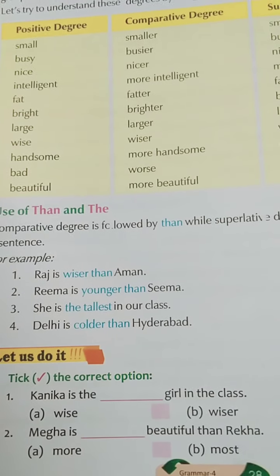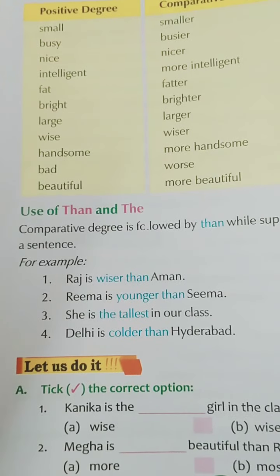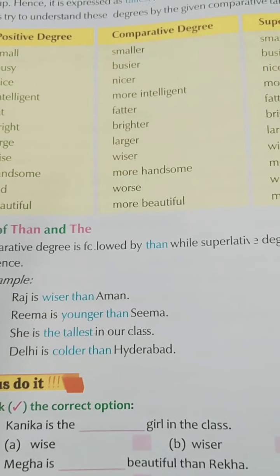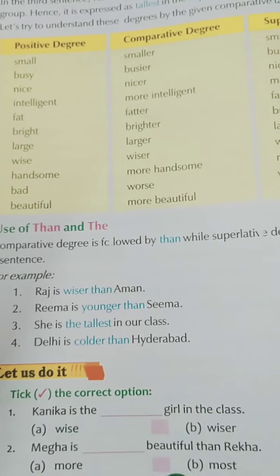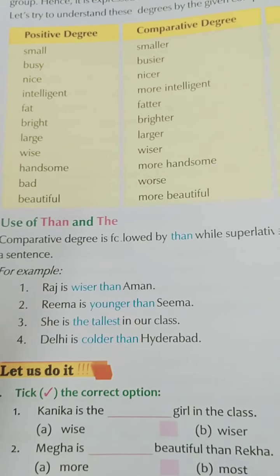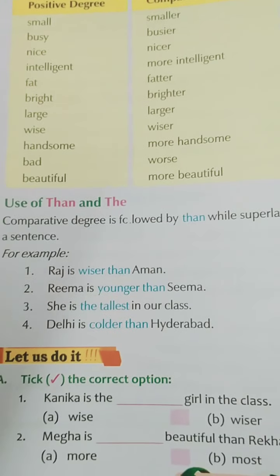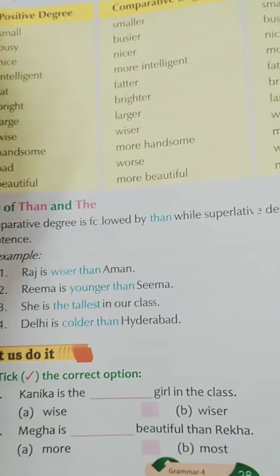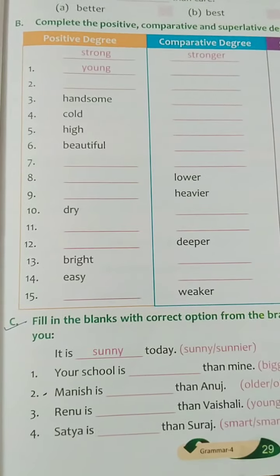She is the tallest in our class; Delhi is colder than Haridwar. So where we use comparative degree, we use 'than', and the superlative degree is preceded by 'the'. Go through these examples. We will be doing all the exercises with the help of worksheets — the worksheets will be sent to you all soon. Please complete the work.